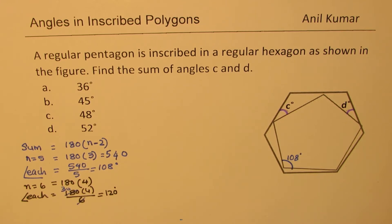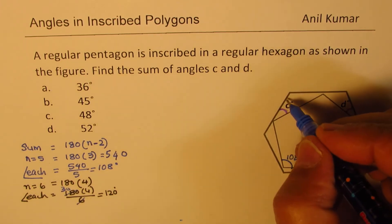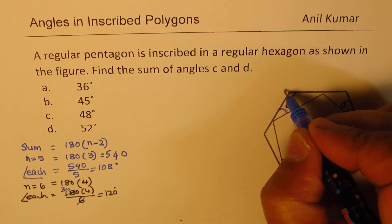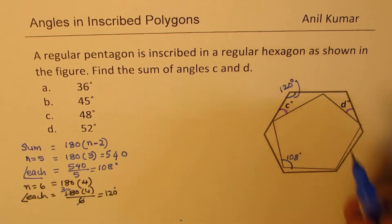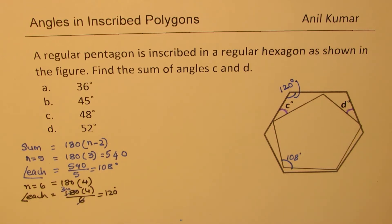So for a hexagon, the angle here will be 120 degrees. So we're talking about the inside angles. So that is known to most of the students. Now that should help you to find the sum of angles C and D.